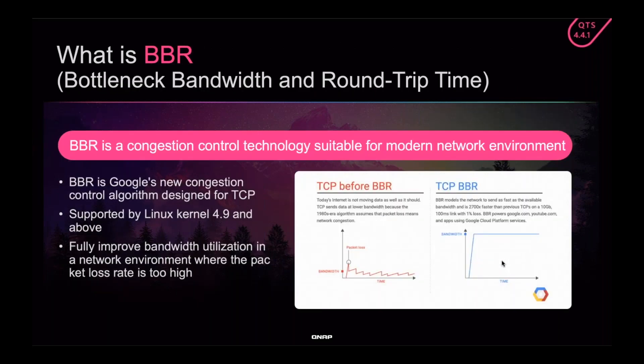Having deduplication before sending the backup through the network already makes it happen faster. But to make it even faster, we now support TCP BBR — a network protocol that allows you to make better use of the internet bandwidth you have, so backups through the internet will usually happen faster. This may not help as much on your local area network, but it helps through the internet. As a general rule, the more opportunities for packet loss there are, the more TCP BBR helps.